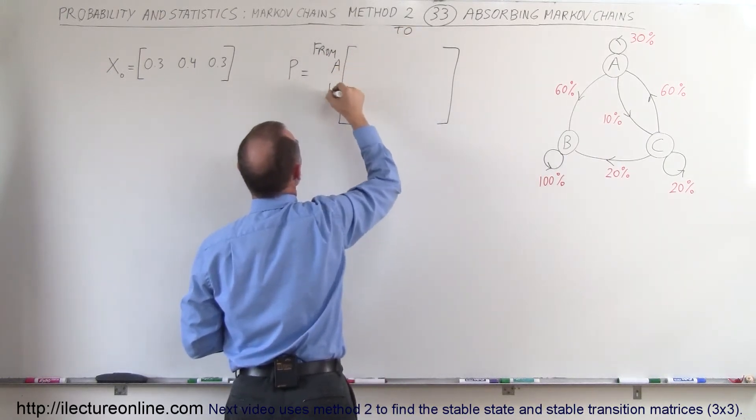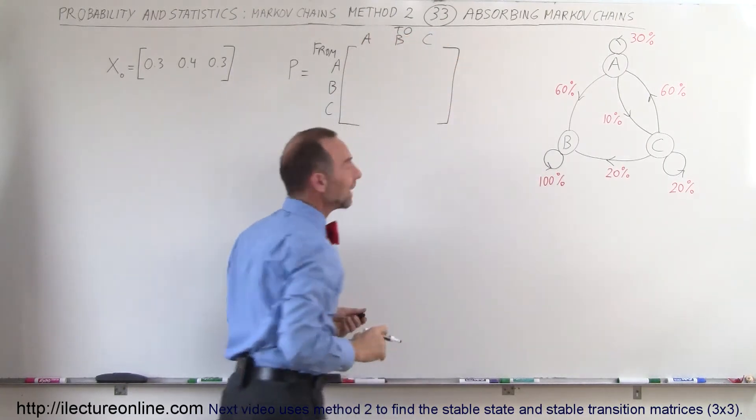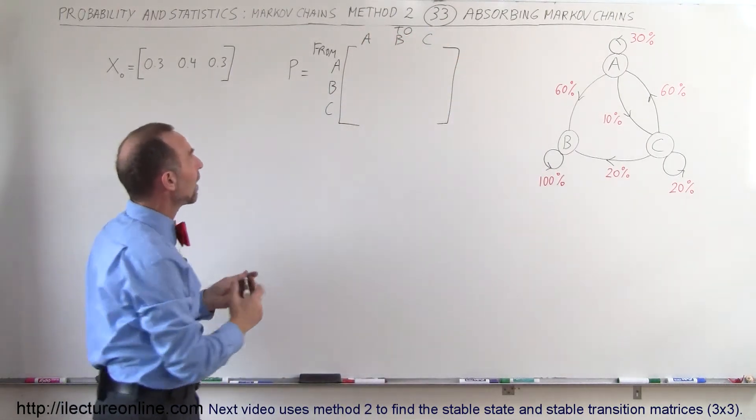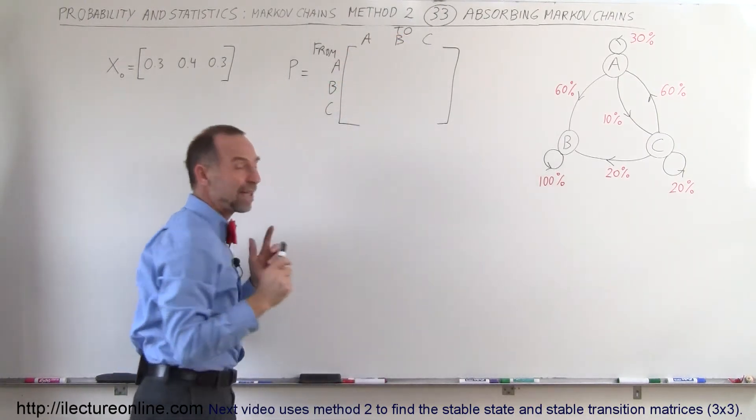So we go from A, B, C to A, B, and C. So in this particular method of using Markov chains, we have the from stores on the left side and the to stores at the top. So now we have our matrix.